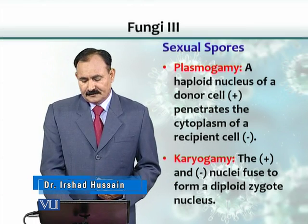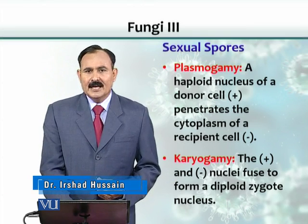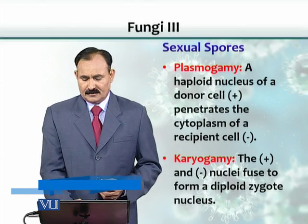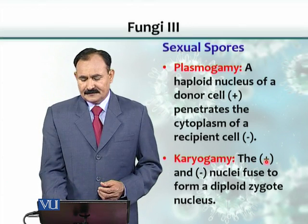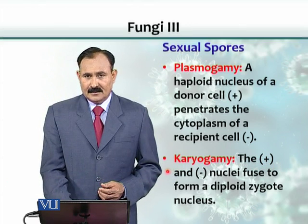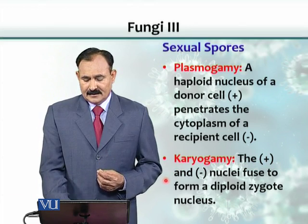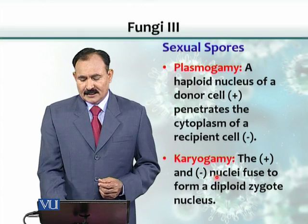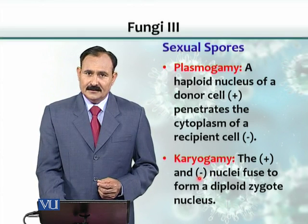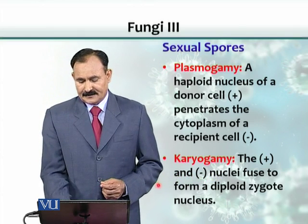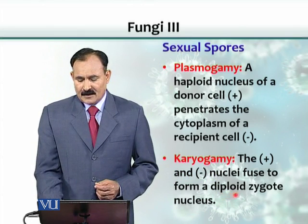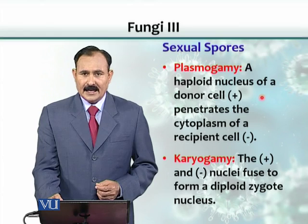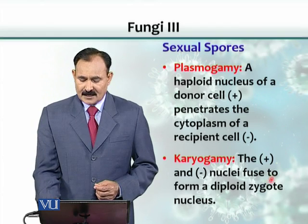The second stage is called karyogamy. Karyo means nucleus, and gamy means to unite. So here, the nucleus of a plus cell combines with the nucleus of the recipient cell, which is a negative cell, and they form a diploid zygote. So the number n would become 2n here.